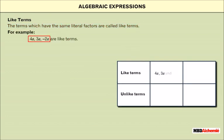Like Terms: The terms which have the same literal factors are called like terms. For example, 4a, 3a minus 2a are like terms. Also, 3x square y, 5x square y, 6x square y are like terms.